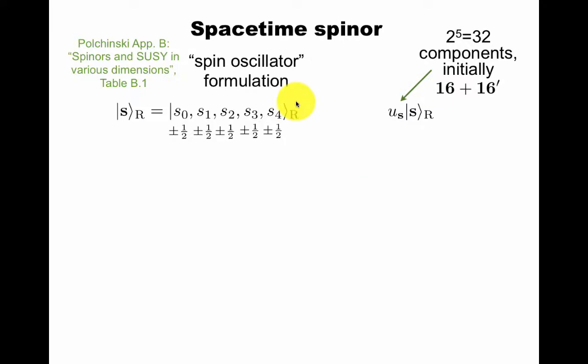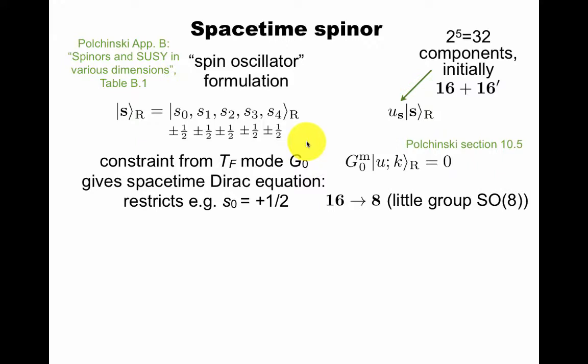As discussed in the other video, there are two sectors in the superstring. There's the Ramond sector, and there's the Neveu-Schwarz sector. The Ramond sector, the states are labeled by these spin eigenvalues. There are five of them. So you have 2 to the 5 equals 32 components. You can split them into 16 Weyl fermions plus 16 prime Weyl fermions, and both of these are Majorana. These can take either value plus minus 1 half, so you have 32 combinations. So you have these big spinors in 10 dimensions. There's a constraint from BRST quantization from the zero mode of the TF supercurrent that gives you the spacetime Dirac equation. And this restricts, for example, to the 8 left chiral spinor in 10 dimensions, which transforms properly in the little group as befits a massless spinor representation in 10 dimensions.